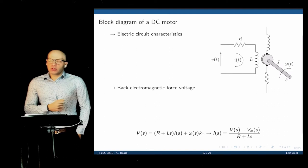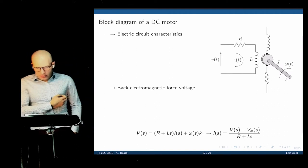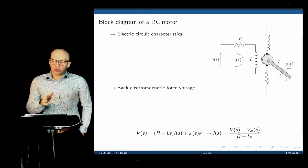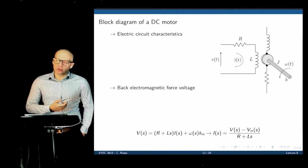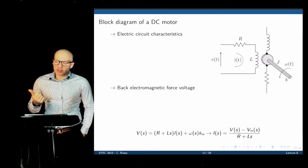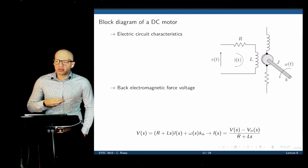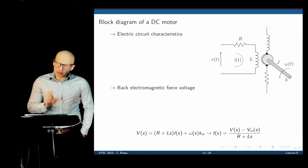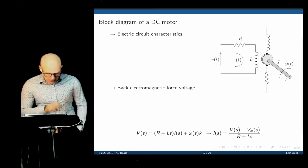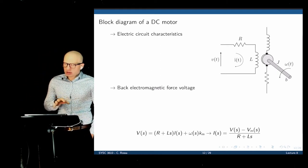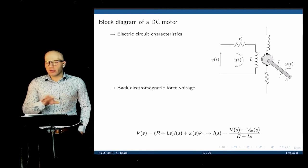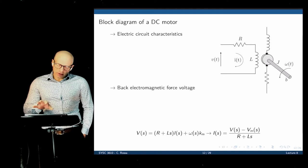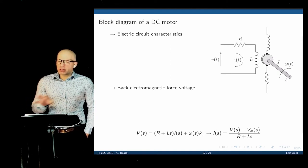Let's do an example using a DC motor. A DC motor will serve as an actuator in many processes we want to control — the insulin pump has a DC motor, anything that provides motion has a DC motor, and a ventilator has a DC motor. This is an interesting example because it has a feedback system within itself.